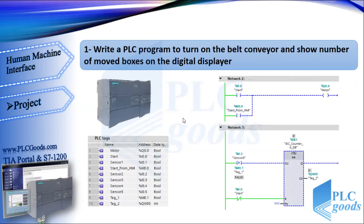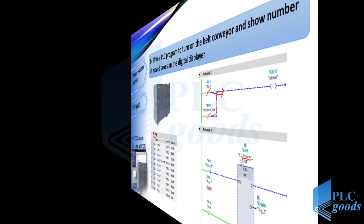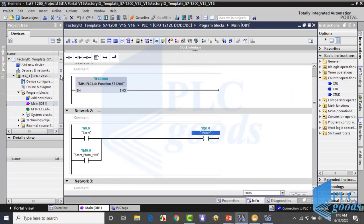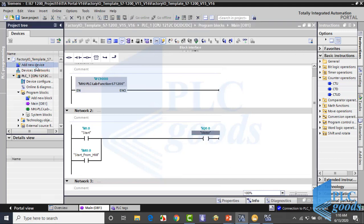For the PLC, these tags are used. At the first network, the conveyor is turned on by a PLC input or HMI screen. In the next network, a counter counts moved boxes. It's expected that you can design this plant with Factory IO and write the PLC program. So let's do the HMI part.